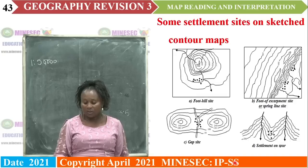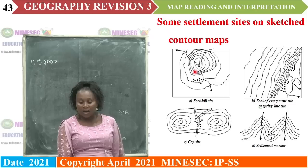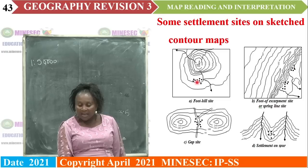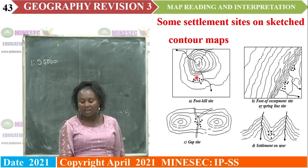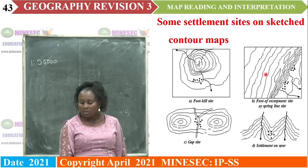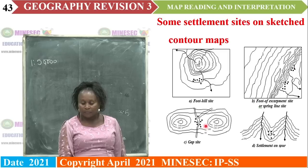These are some examples. These are contours — this is a conical hill, and these are buildings here. If these buildings are here with spaced out contours, it shows that this settlement is sited at the foot of a hill. This other one is an escarpment — foot of escarpment settlement. In between a gap, two conical hills and a saddle — a gap site or saddle site settlement.